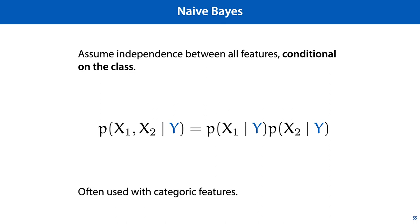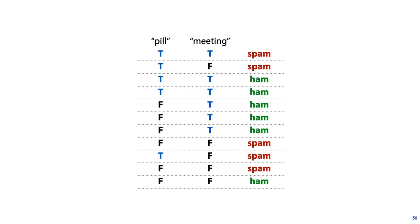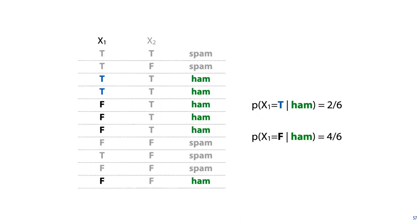We'll illustrate how naive Bayes works in detail with the following example. We have binary features; the task is spam classification of emails, and we have two binary features. The first indicates whether the word 'pill' occurs in the email, and the second indicates whether the word 'meeting' occurs in the email. We have some data, and we will build a naive Bayes classifier by simply fitting a Bernoulli distribution to each feature — estimating the probability that 'pill' occurs in the email given that its class is spam as the relative frequency with which the pill feature was true for spam emails.